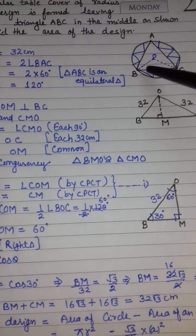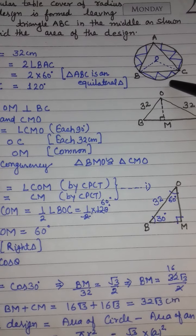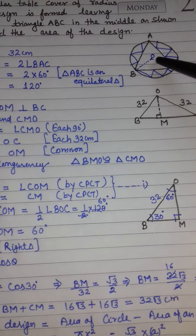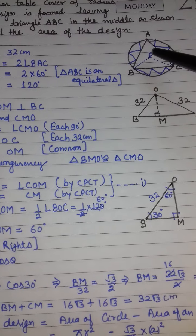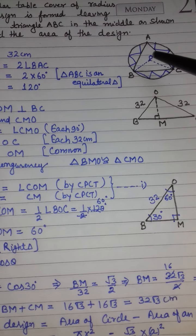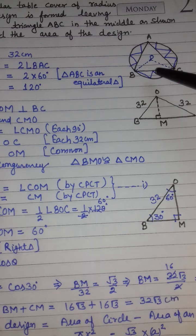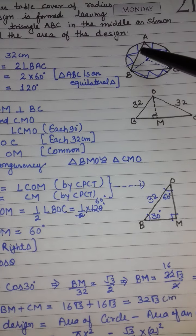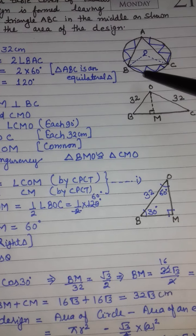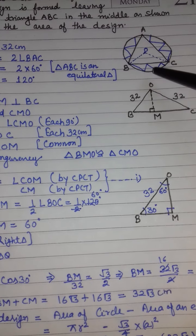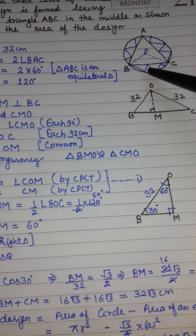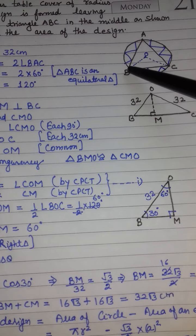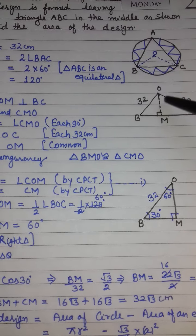दूसरा method यह है कि center का angle find करें, फिर segment का area find करें। तीन segment बन रहे हैं, तो तीनों का area multiply कर दें। Segment का area निकालने के लिए: area of sector minus area of triangle। हमारे पास दो methods हैं।